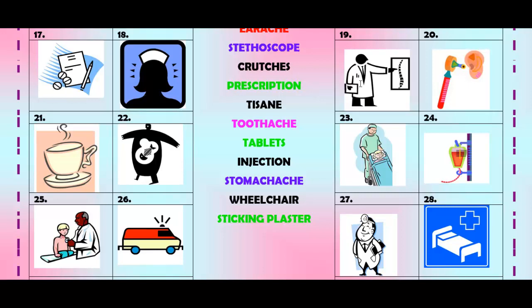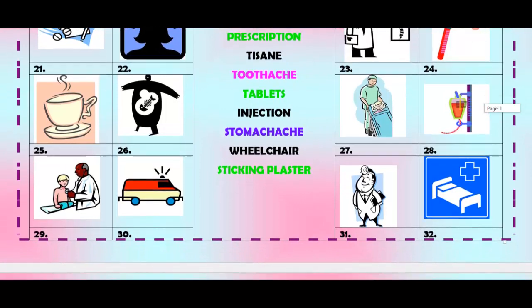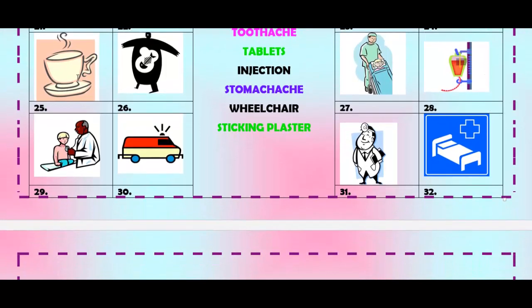Number twenty-three — you have a slipped disc if your vertebrae is curved out. That must hurt a lot. If your ears hurt, maybe you have water inside and an infection — you have an earache.